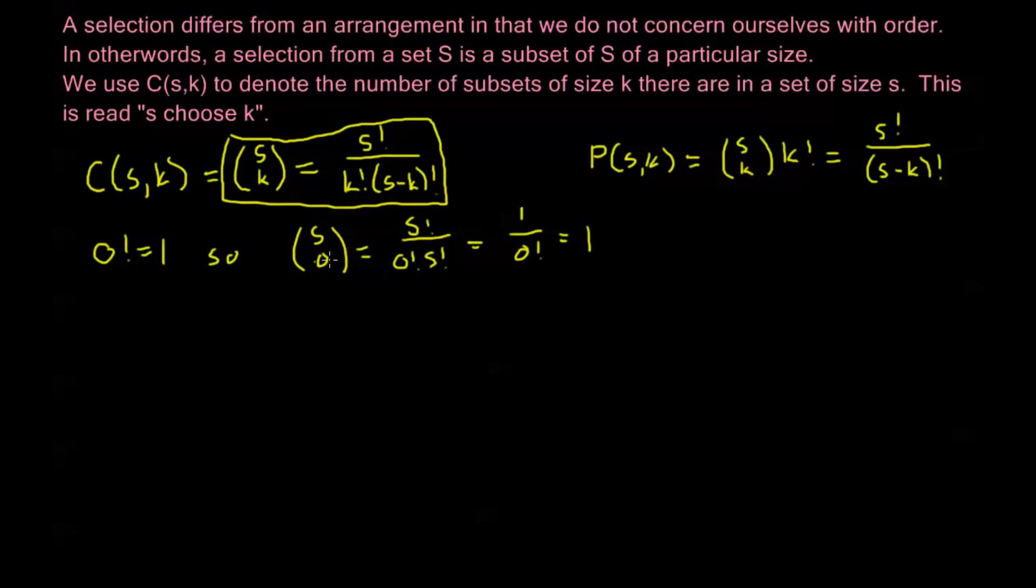Now this is very intuitive. What this means is we're taking a set of size S and we're saying well how many subsets are there of size 0? And we know there's exactly one subset of size 0, it's the empty set. Or if you're thinking in terms of making a choice, you're saying well I have a set of size S, in how many ways can I choose 0 of those elements? Well, there's only one way to do that. You just don't choose any of them. There's not multiple ways where you can choose nothing.